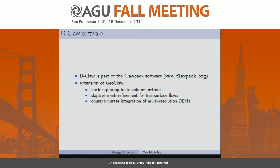D-CLAW is the software that solves our mathematical model, and it's part of the Clawpack software, which is freely available open source at clawpack.org. Clawpack is developed generally for hyperbolic systems. D-CLAW is an extension of GeoClaw, which uses shock-capturing finite volume methods, adaptive mesh refinement tailored for free surface flows, and multiple user tools. It accomplishes robust and accurate integration of multi-resolution DEMs, so we can use many different DEMs at different resolutions and it will automatically process those.